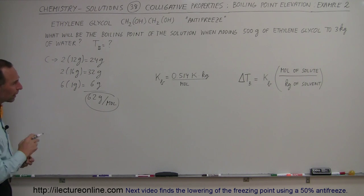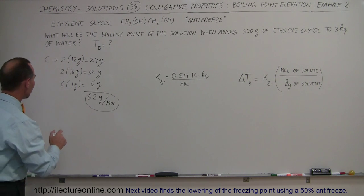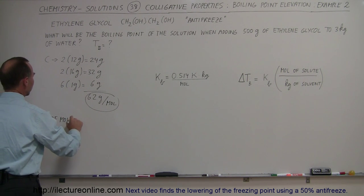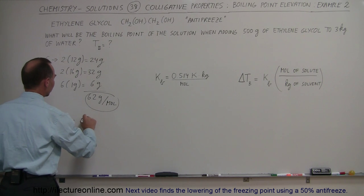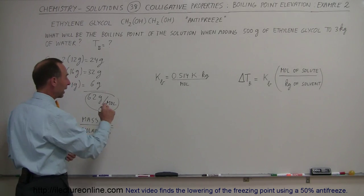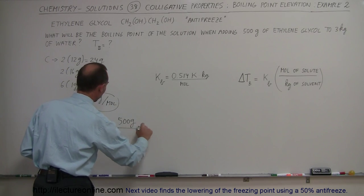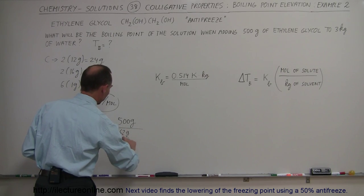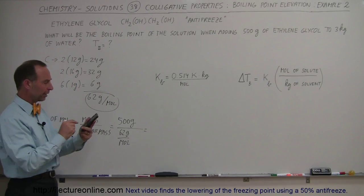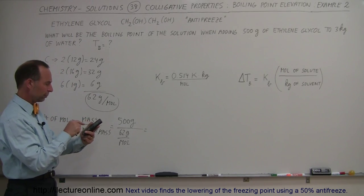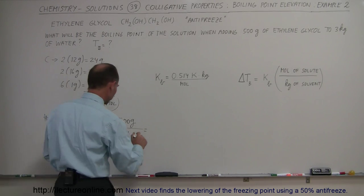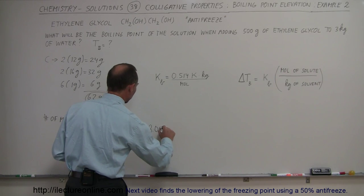If we add 500 grams, how many moles do we have? So the number of moles is equal to the mass divided by the molar mass. In this case, the mass that we add is 500 grams, and the molar mass is 62 grams per mole. So for the calculator, 500 divided by 62, so we have 8.06 moles.